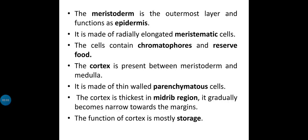Meristoderm is the outermost layer and functions as an epidermis. It is made up of radially elongated meristematic cells. The word meristoderm comes from 'meristo' plus 'derm'. Derma means skin — the outermost layer. Meristo refers to meristematic cells. So meristoderm literally means a dermal layer made up of meristematic cells — the outermost surface layer.